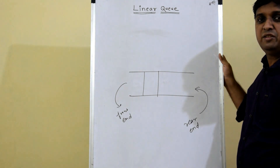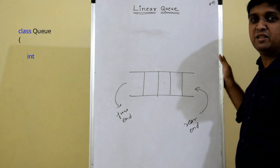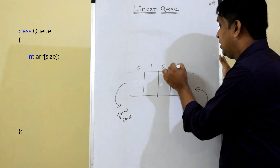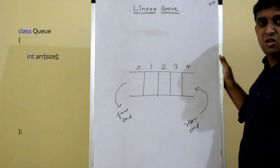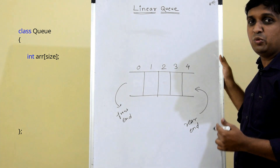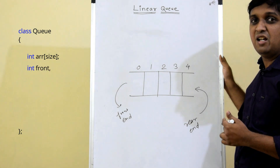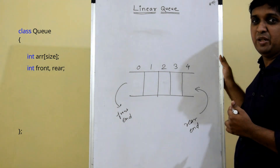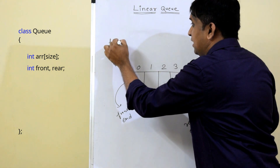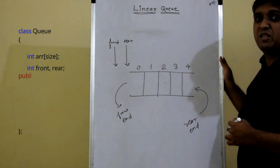To implement queue in C++, first you need to take one array as a data member in a class. This array has indices 0 through 4. The other data members of class Queue — unlike stack where we had just one data member 'top' — here we need two data members: front and rear, to indicate the front end element and rear end element.